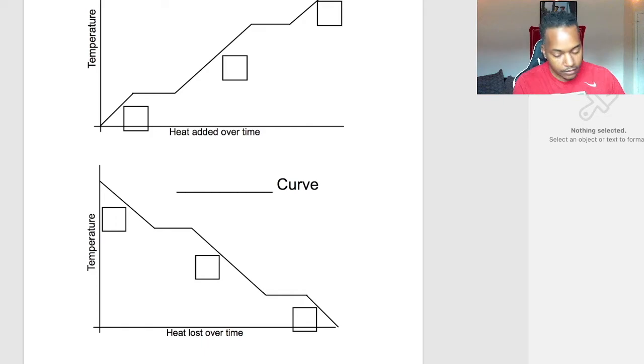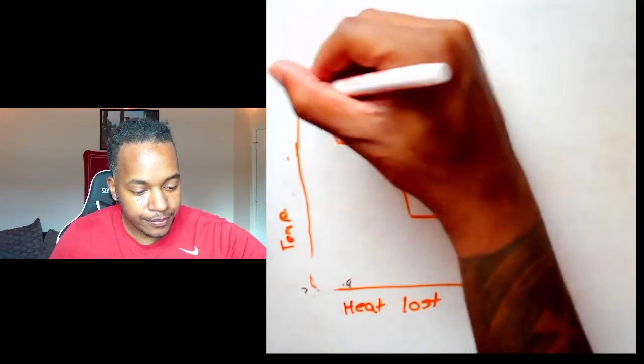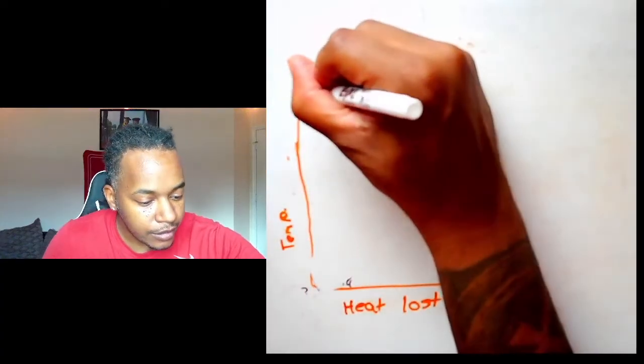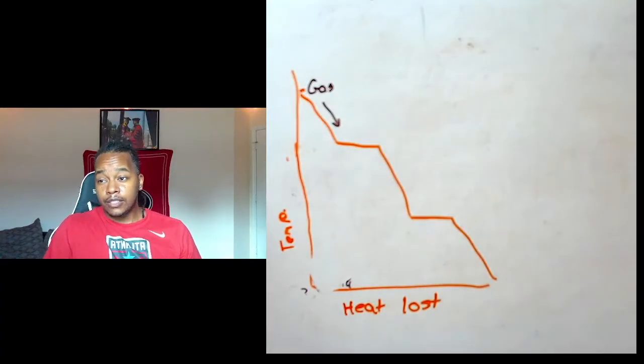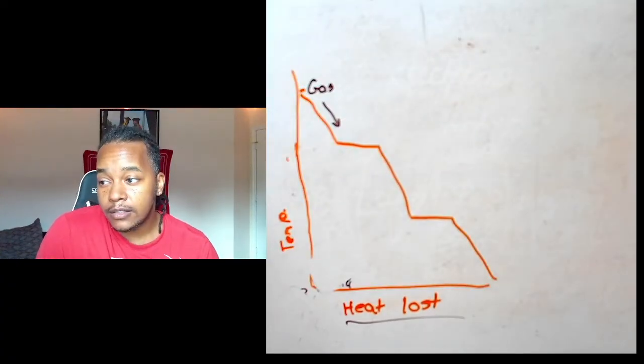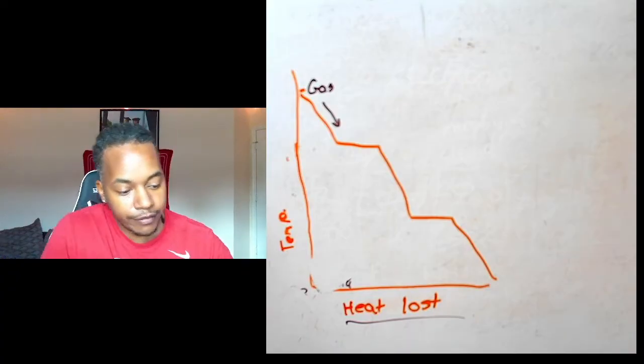We're going to look at the second one where it's reversed, and instead of heat being added, heat is going to get lost. So we start here—at that point, for something to be high in temperature we're starting with the gas. As it cools down, it goes to its first phase change in a heat-losing graph, which means it's our cooling graph.